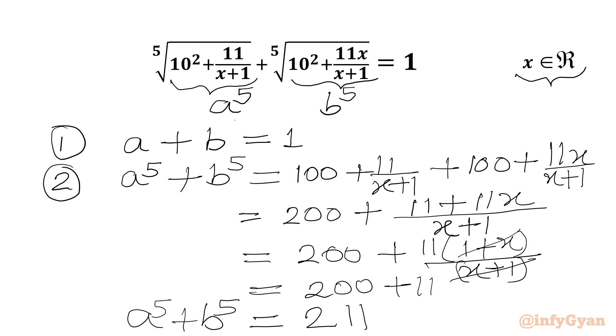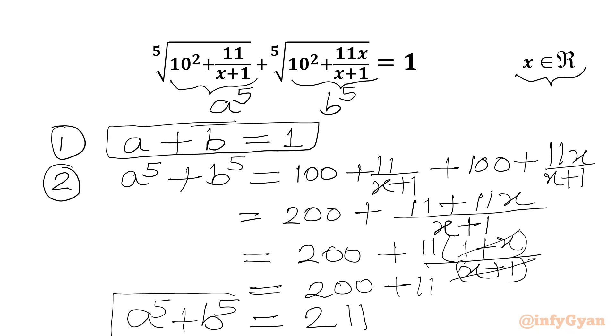So we have to solve this new system of equations: a + b = 1 and a⁵ + b⁵ = 211. Let us solve.